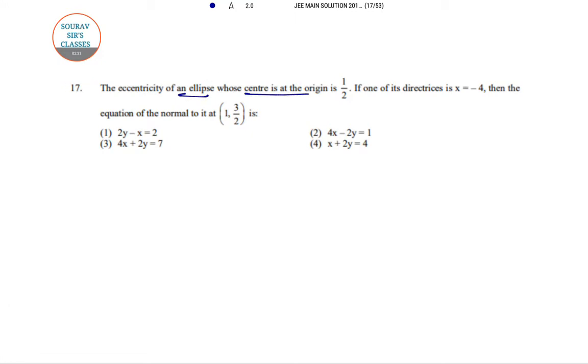Now, eccentricity of an ellipse whose center is at the origin and one of its directrices is x equal to minus 4, then the equation of the normal they want us to find.